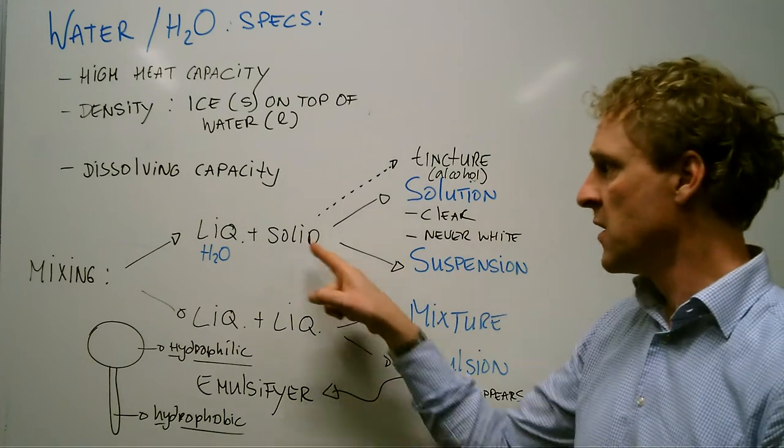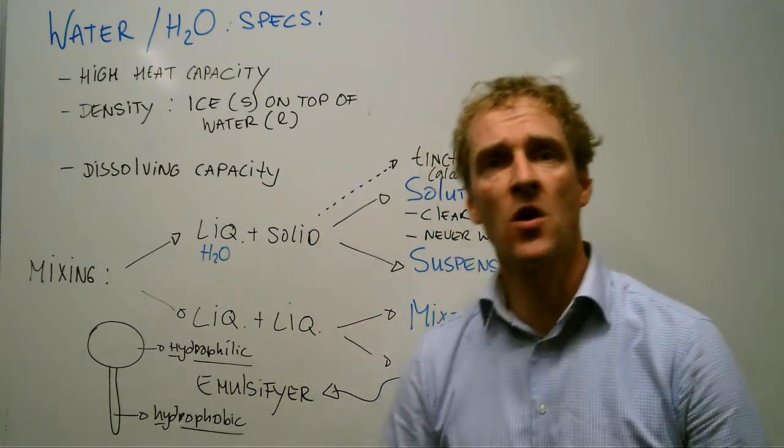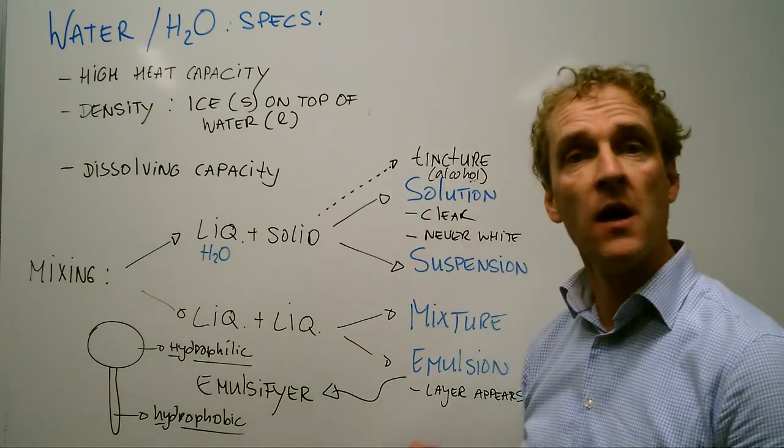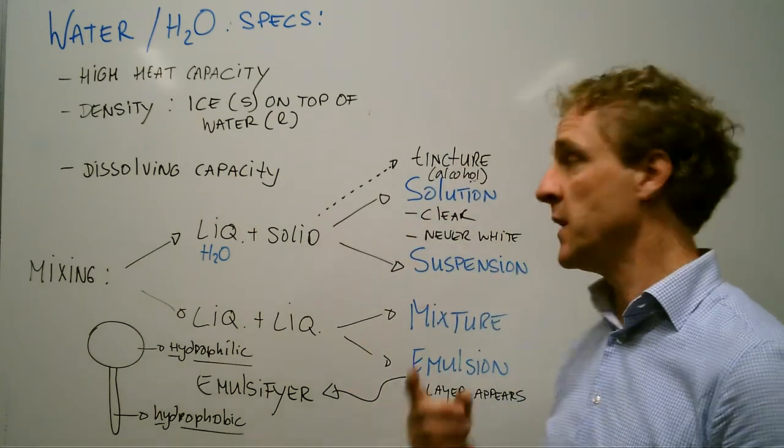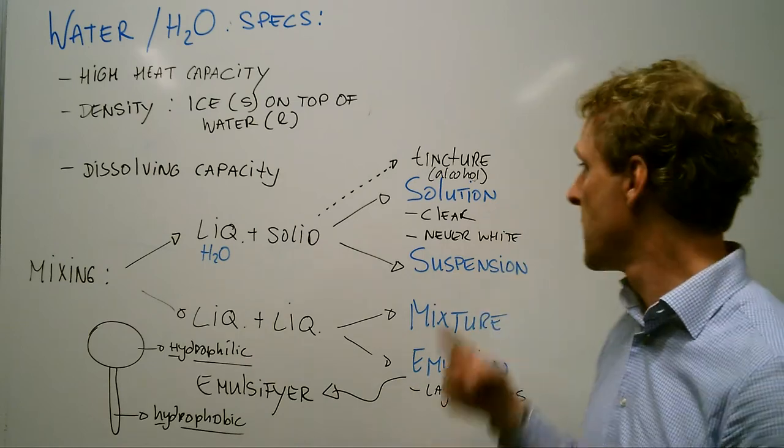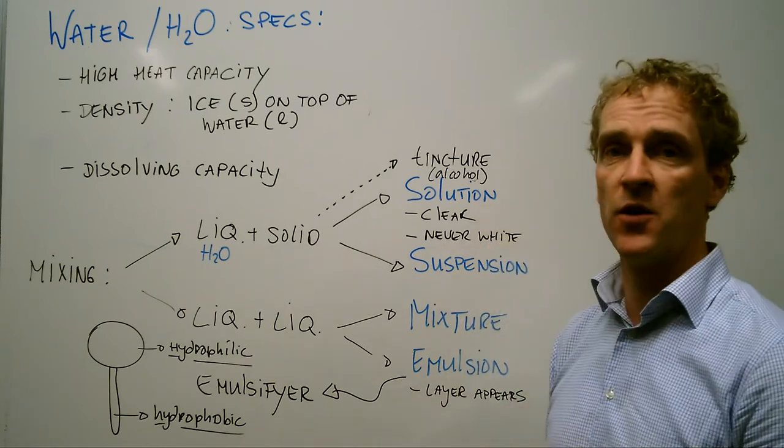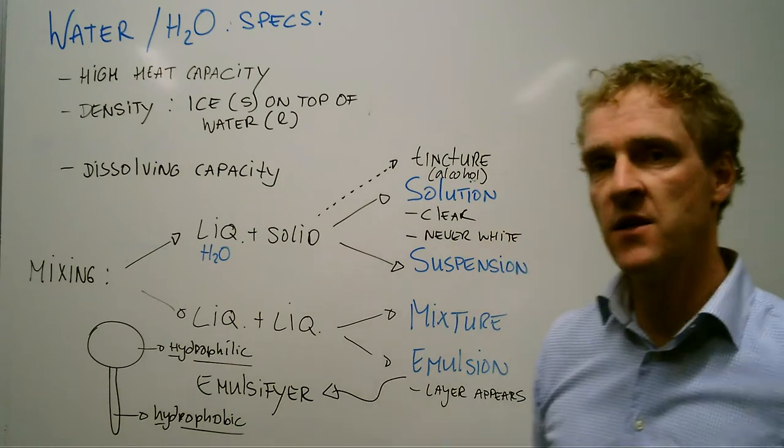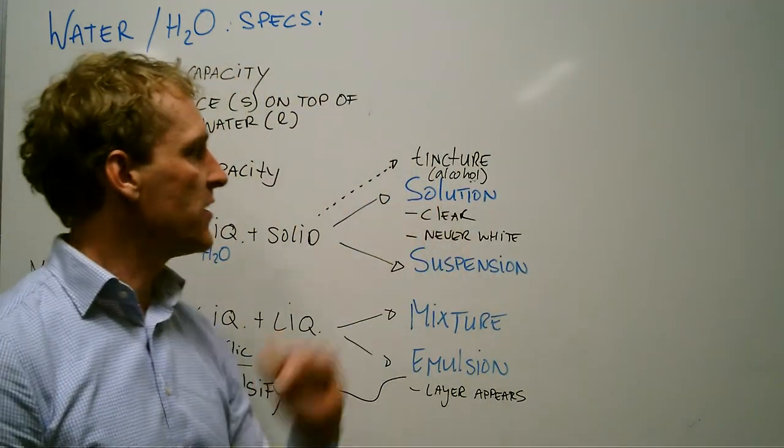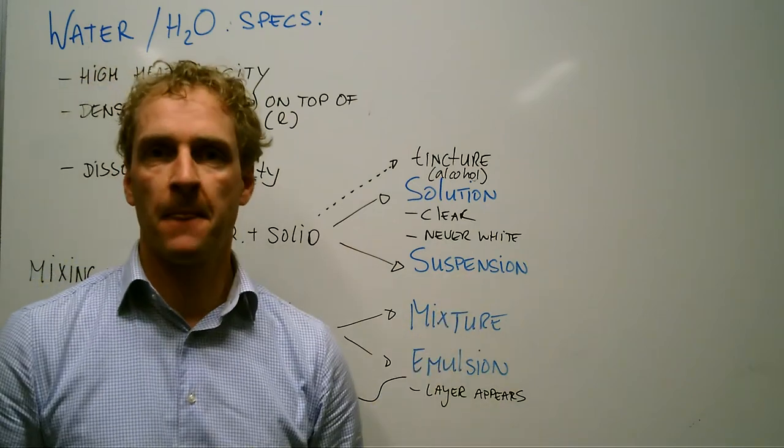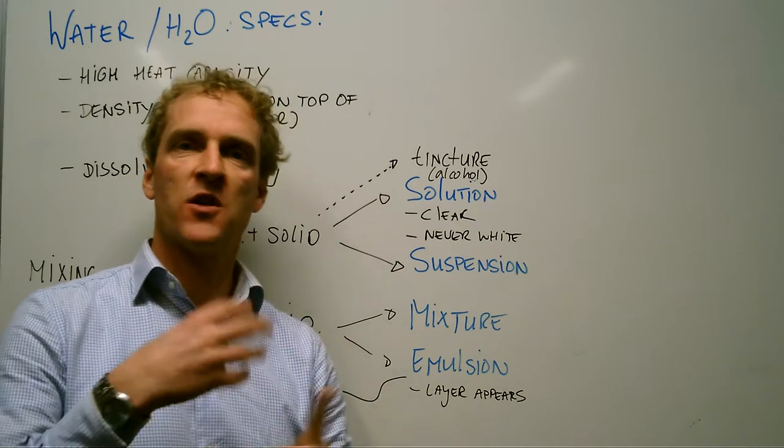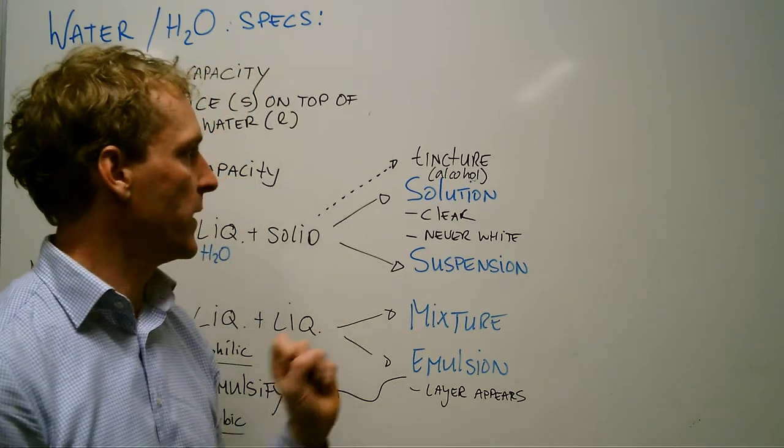The first is a solution. So if I dissolve a solid in my water, it could turn into a solution. And one of the examples could be sugar and water. Dissolves very rapidly, very well. And you get a clear solution, and it can never be white. And so therefore, what we think of as a solution, like milk, is not a solution. It's a suspension. The tiny milk particles will not dissolve and still float in my liquid.